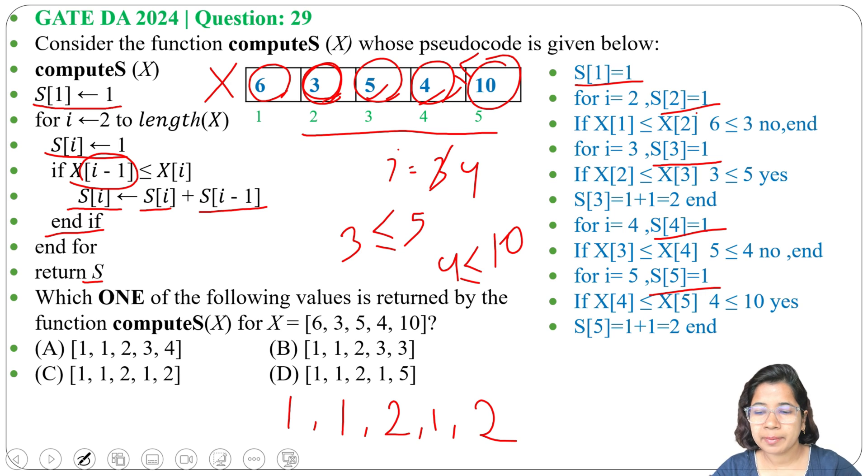Now check in which option it is present. Option A: [1, 1, 2, 3, 4] - no. Option B: [1, 1, 2, 3, 3] - no. Option C: [1, 1, 2, 1, 2] - yes, this one is correct. Option D: [1, 1, 2, 1, 5] - no.